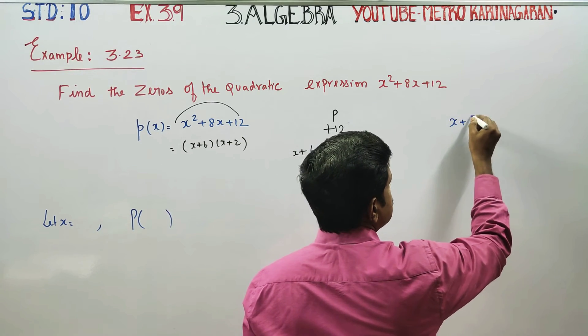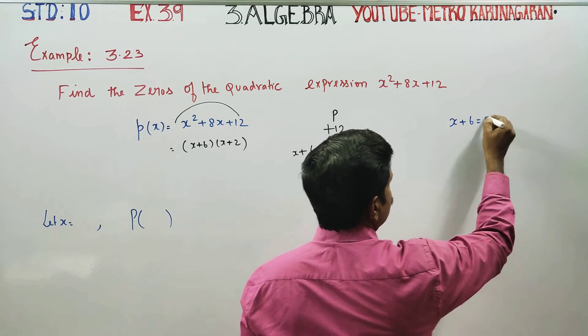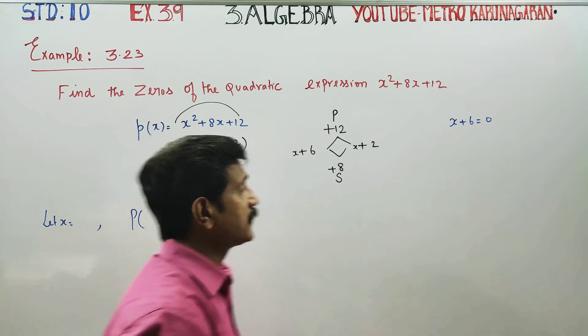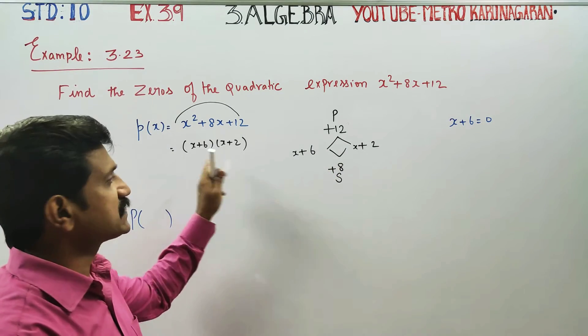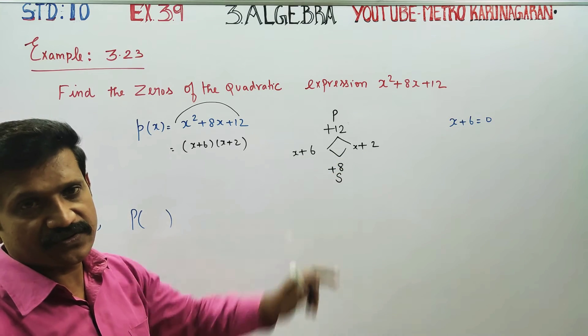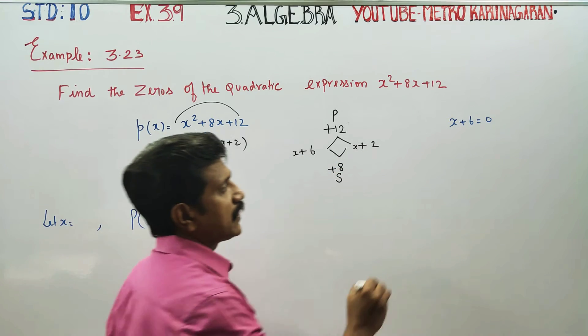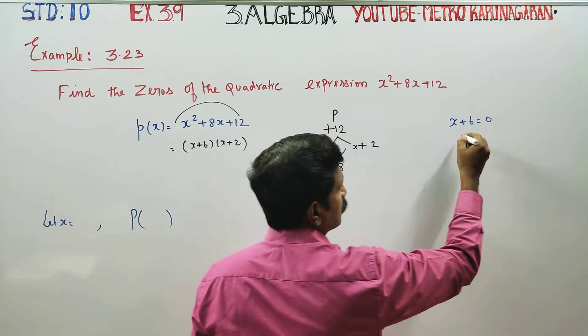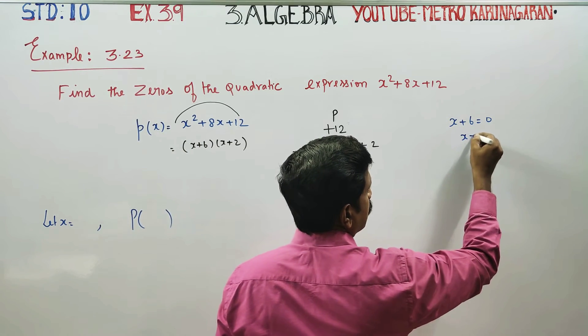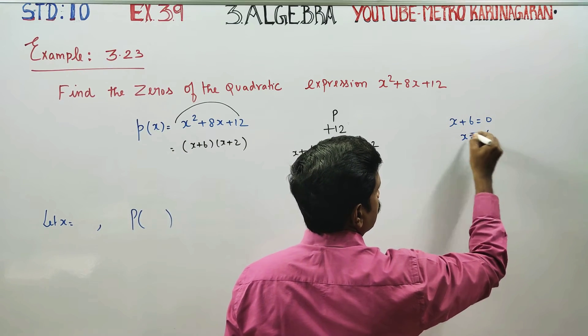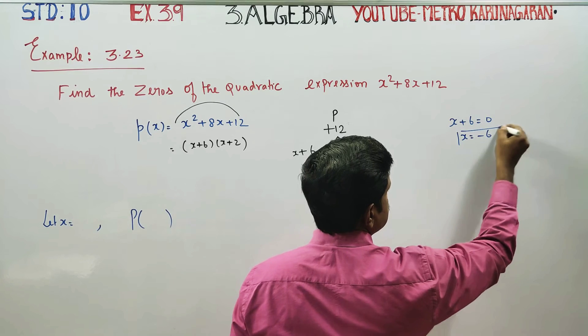X plus 6 is equal to 0. Then, x is equal to minus 6. So x equals minus 6.